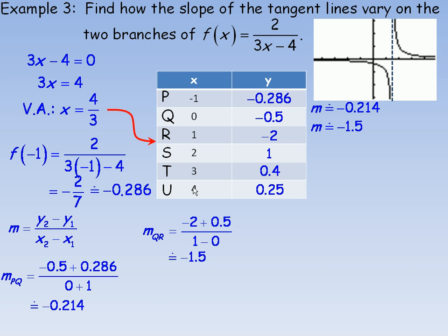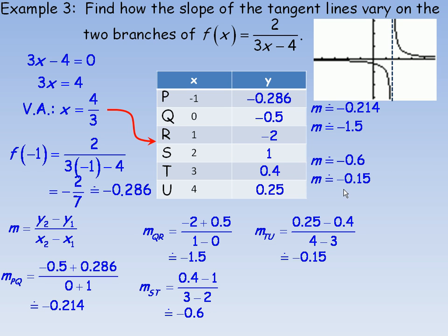So I'll do s to t next. So 0.4 minus 1 here, over 3 minus 2. And that works out to negative 0.6. So we'll put negative 0.6 here. And one more between points t and u. 0.25 minus 4 over 4 minus 3. And that works out to negative 0.15. And we'll put that beside the chart here as well.